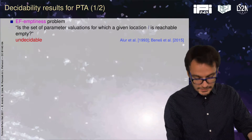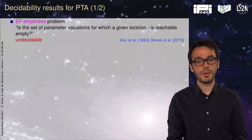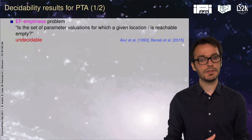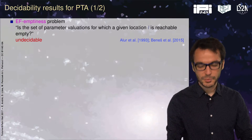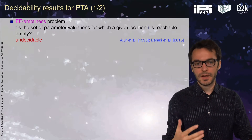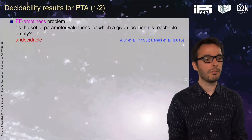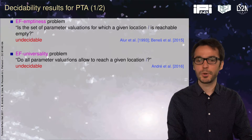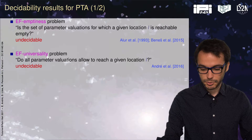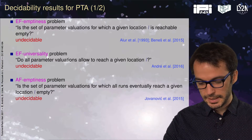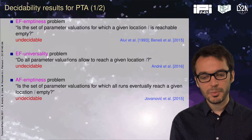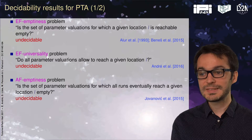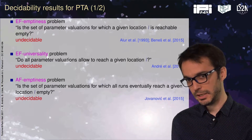What is the state of the literature concerning decidability for parametric timed automata? For the reachability emptiness problem, this problem is famously undecidable — known since the seminal paper on parametric timed automata — and there have been many variants improving the minimum number of clocks and parameters. The universality problem is also undecidable, shown recently with Didier Lime and Olivier Roux. The AF emptiness problem — unavoidability emptiness — asking whether the set of parameter valuations for which all runs eventually reach a given location is empty or not, is also undecidable.